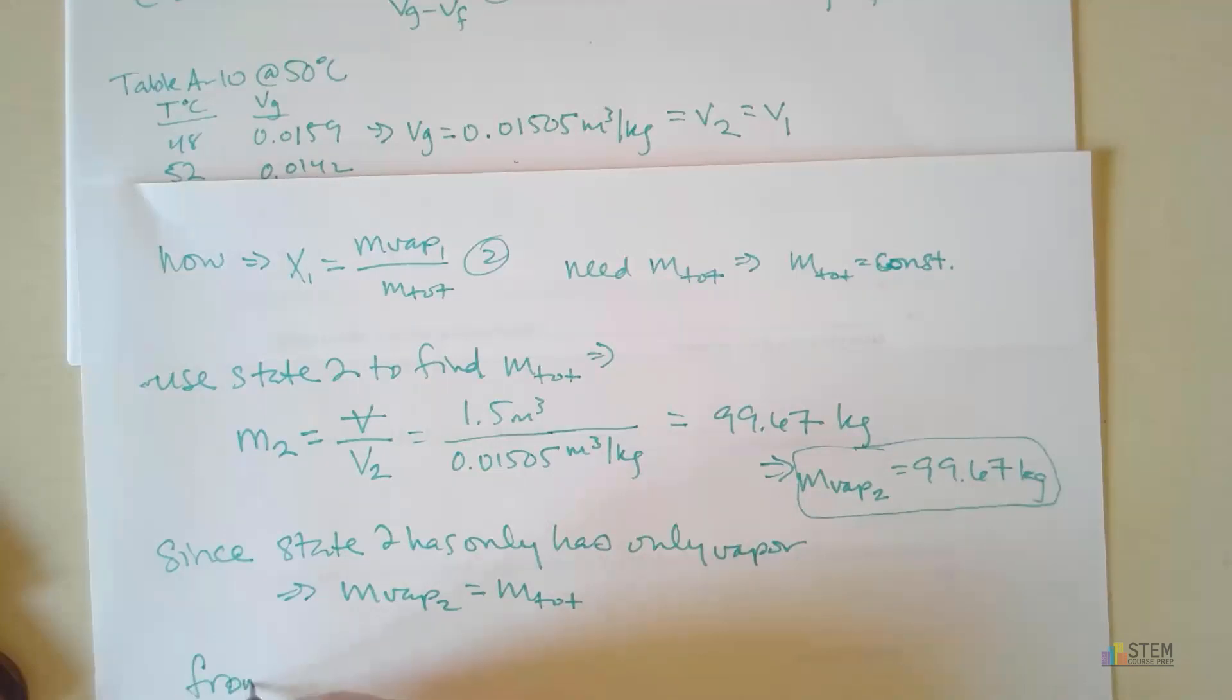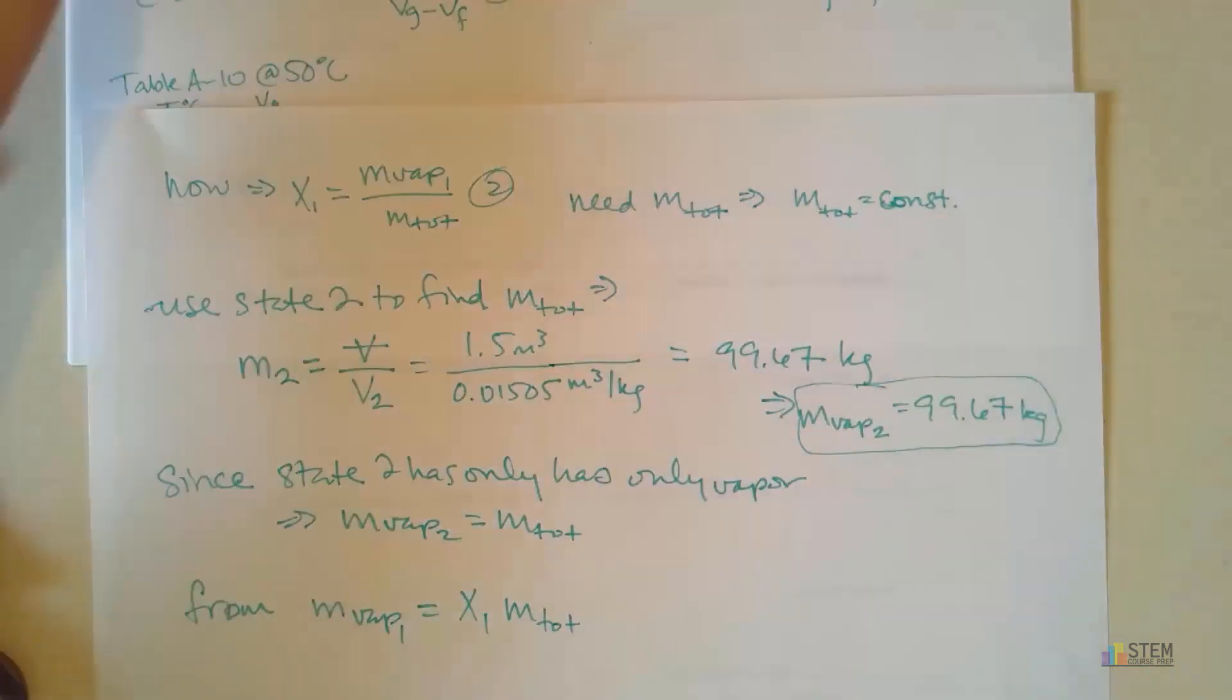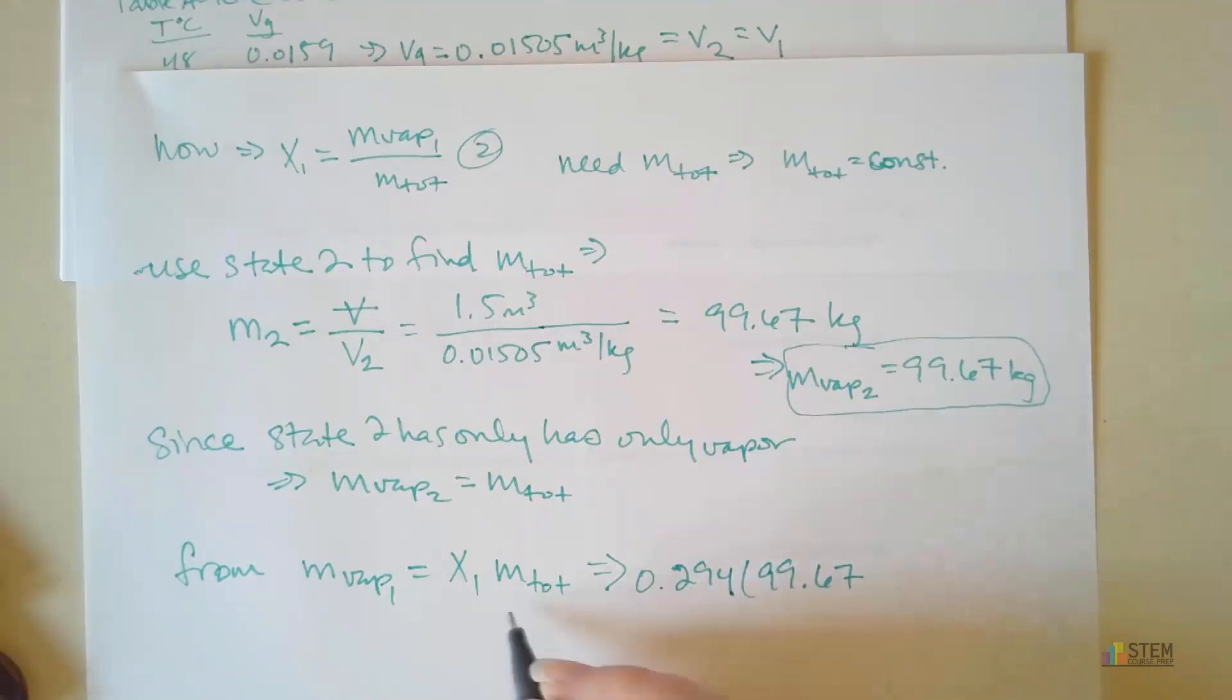Now if we go back to equation 2, we know the mass of the vapor for state 1 is going to be the quality of state 1 times the total mass. So now we just plug in these two numbers, and we'll be good to go. So 0.294 times 99.67 gives me a vapor mass for state 1 equal to 29.303 kilograms.